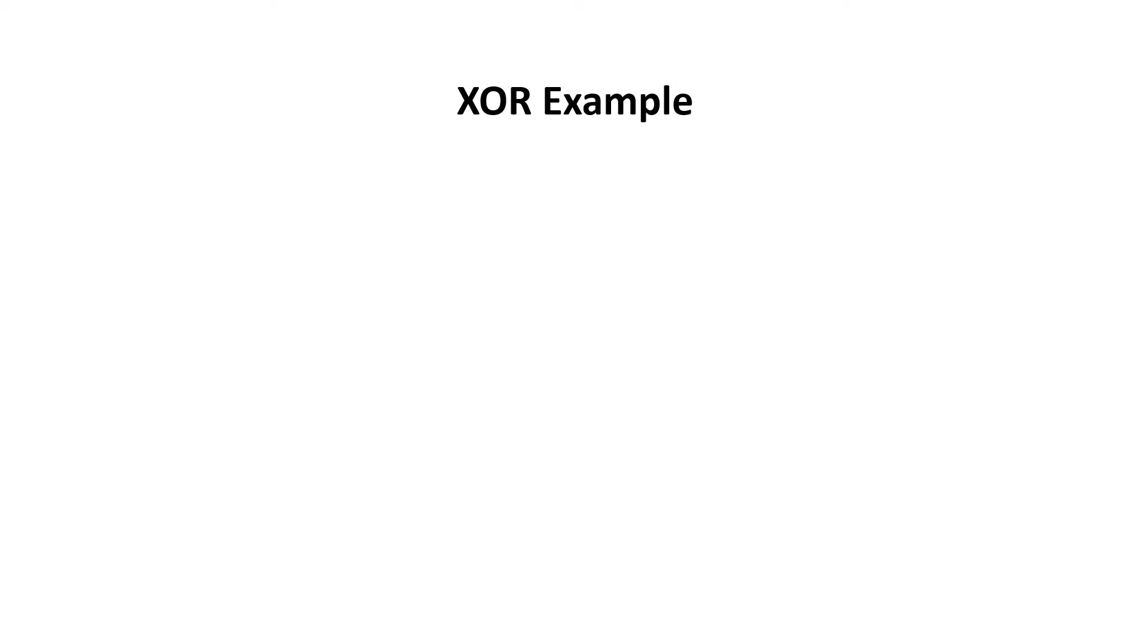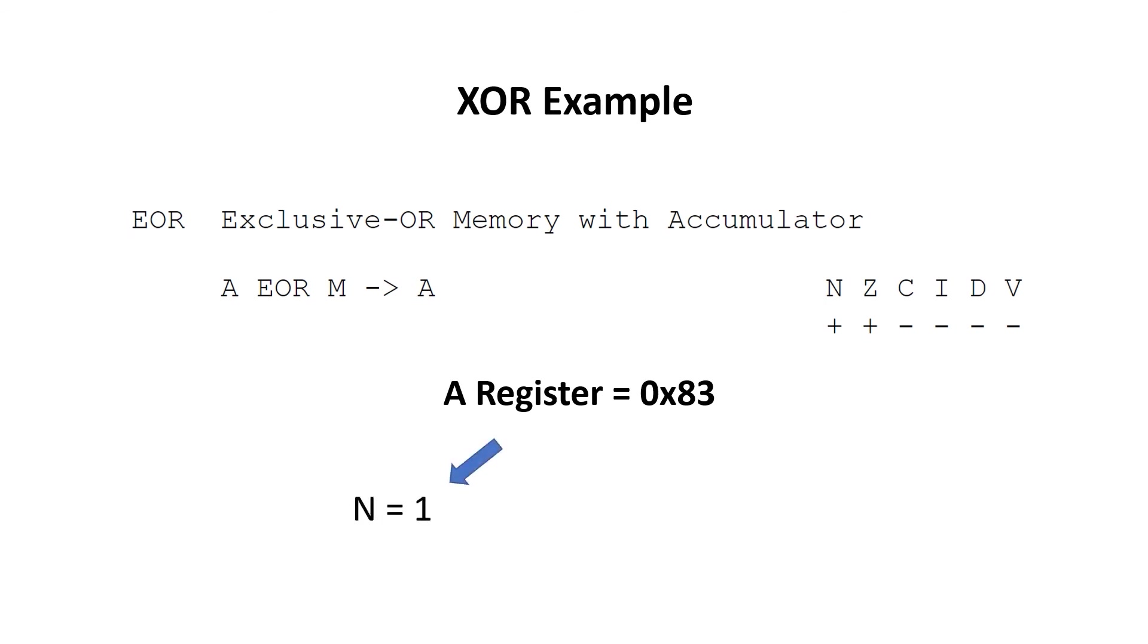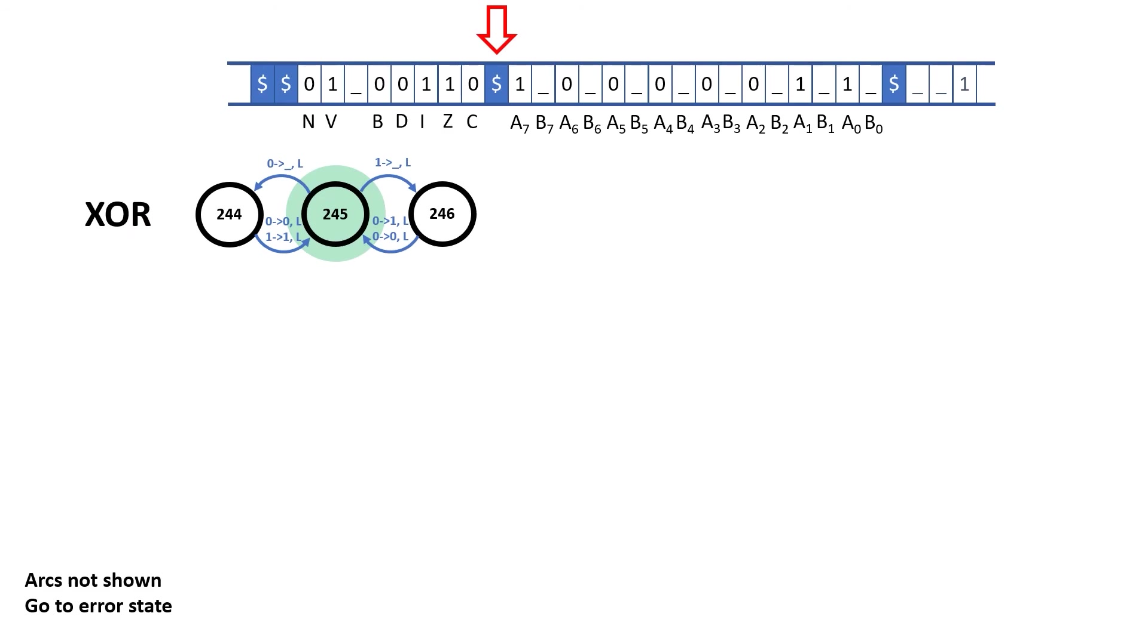If we look at the datasheet for the 6502, we can see that the exclusive OR operation impacts the negative flag and the zero flag. In this last example, the A register was left with 83 hex in it, which means that the negative flag should be set and the zero flag should be cleared. Let's see if I can build a machine that sets the flags appropriately. I'm going to create a new arc out of rule 245 for when I hit the dollar symbol. I want to write the dollar back, move right, and go to rule 300.